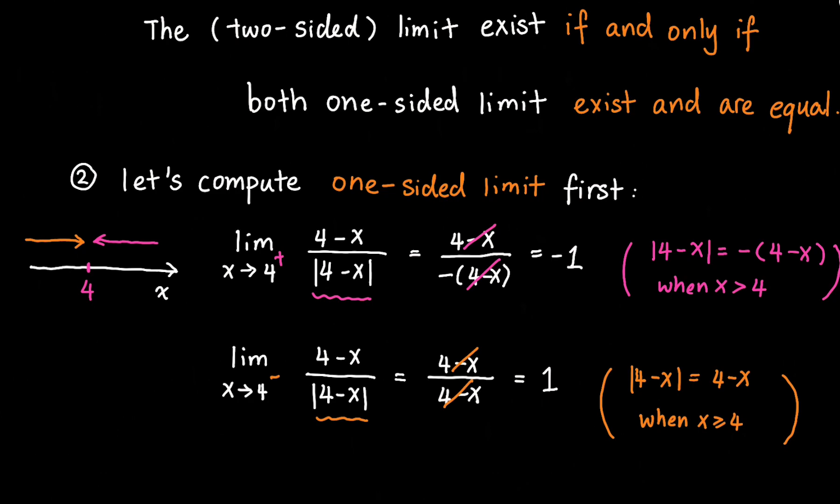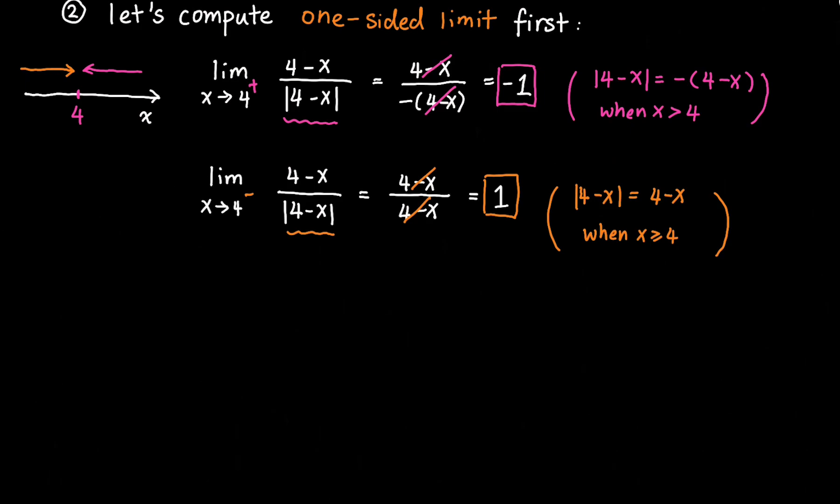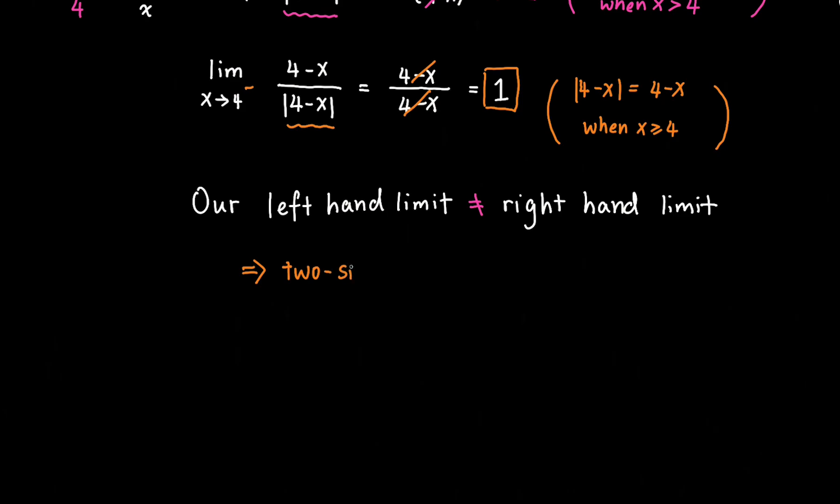Okay, so now we calculated the right hand limit, which is equal to negative 1, and the left hand limit, which is equal to 1. So remember our rule: our two-sided limit exists if and only if both one-sided limits exist and are equal to each other. But in this case, since we have 1 and negative 1, we are not satisfying that condition.